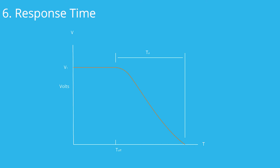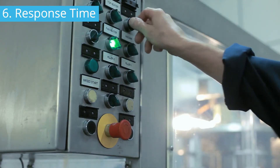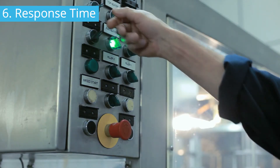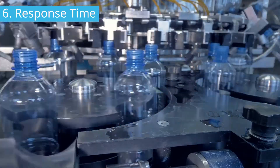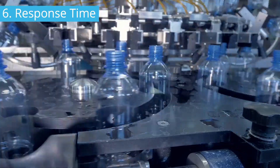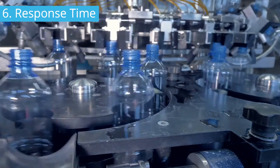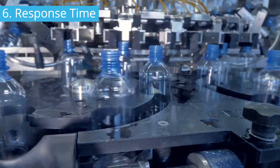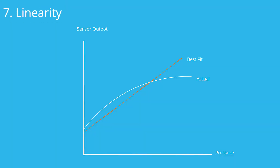Often, sensors don't respond to a change in conditions immediately as it occurs. The period of time in between the change in the environment and the sensor's response is called the response time. How quickly do you need the sensor to respond to its environment? Are the conditions the sensor is measuring changing quickly and frequently? If so, response time will be very important to check for when choosing a sensor. Finally, you'll want to check for the linearity of the sensor. A sensor's linearity is the amount of deviation in the actual measured curve from the sensor's ideal straight line performance.